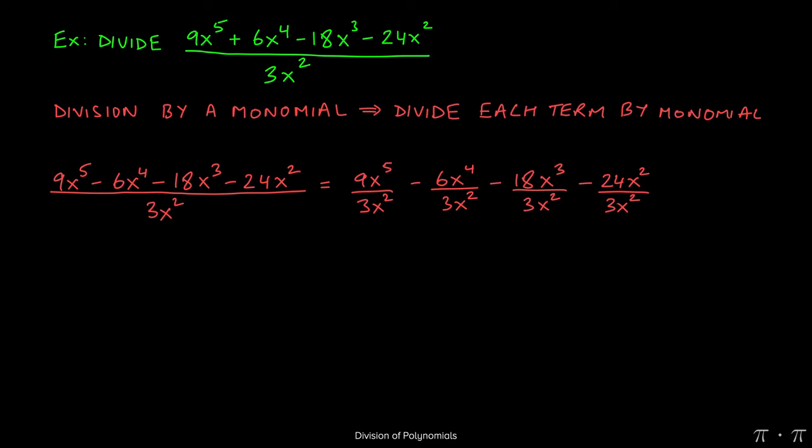Now 9 over 3 will give us 3, while x to the fifth over x squared will give us x cubed. Remember the quotient rule of exponents? Whenever the bases are the same and we're dividing the terms, we subtract the powers. 5 minus 2 will give us 3.